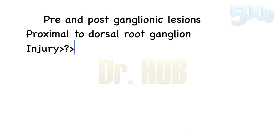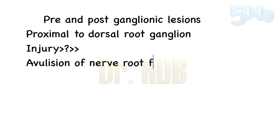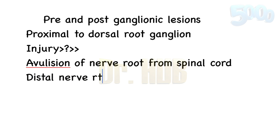Regarding the injury: in preganglionic, there's avulsion of the nerve root from the spinal cord. Whereas in case of postganglionic, there's a disruption of the distal nerve root — the distal nerve root is affected — as well as the nerve trunk or the peripheral nerve.